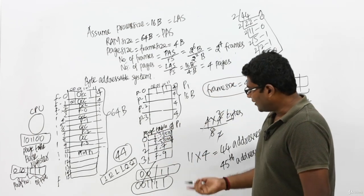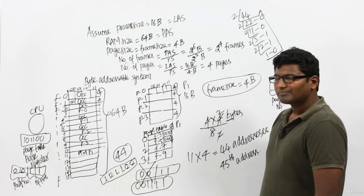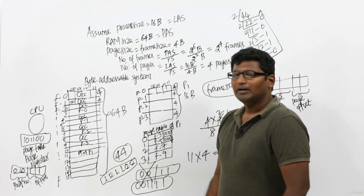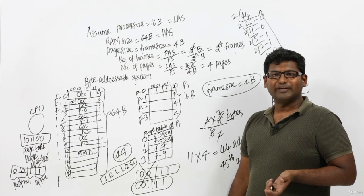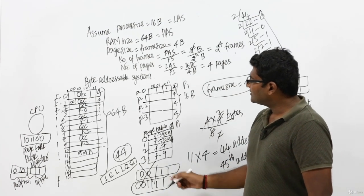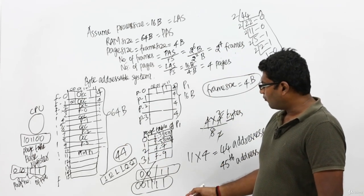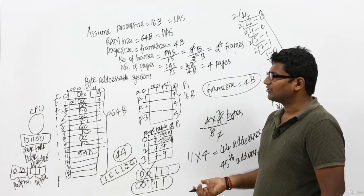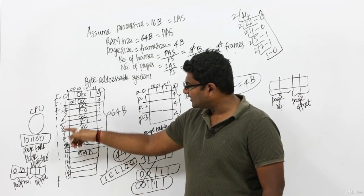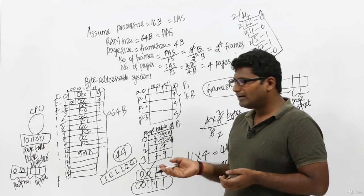It is very simple. Now we have exactly 6 bits for the physical address — because our RAM size is 64 bytes. To indicate 64 bytes we need 6 bits, which is why we have a 6-bit physical address. Within the 6 bits, the first 4 bits indicate the frame number and the remaining 2 bits indicate the offset, also called the frame offset.